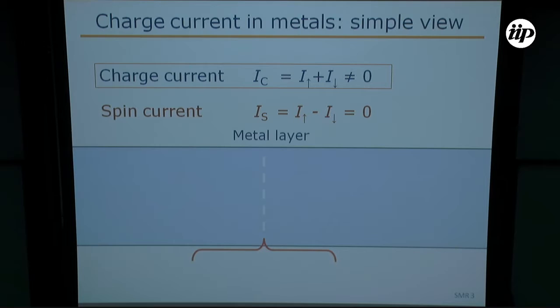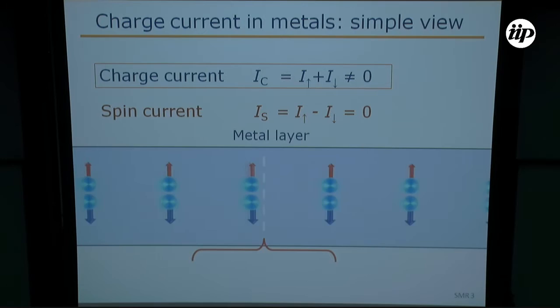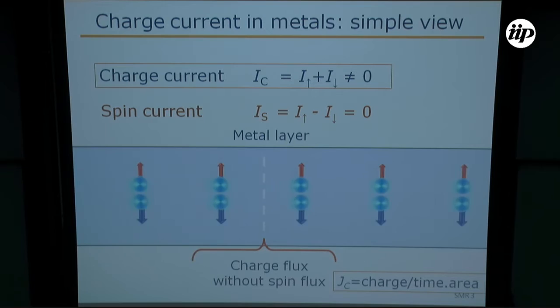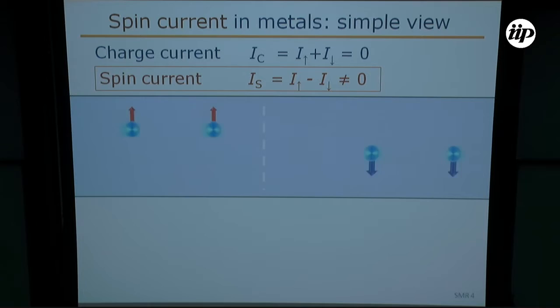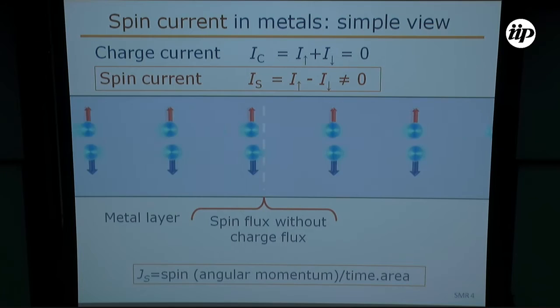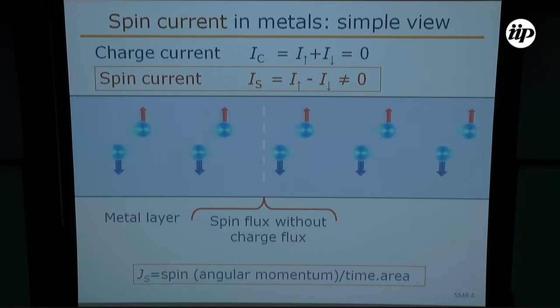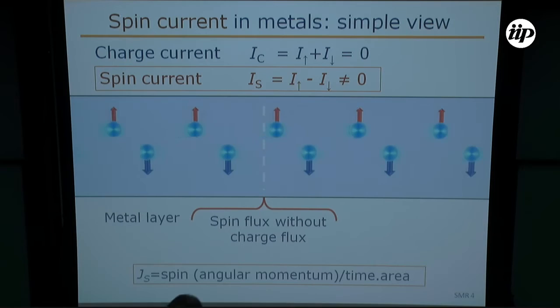A very simple view, neglecting scattering: this is a charged current in a metal. Electrons with opposite spins are moving freely. We have charged flux without spin flux because the spins have opposite direction and their transport cancels. In the next case, electrons with opposite spins move in opposite directions — no charge flux through this cross-section, but we have spin flux. We can say that we have a spin current with spin up in one direction or a spin current in the other direction, and they both add.